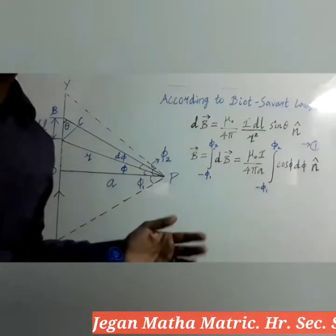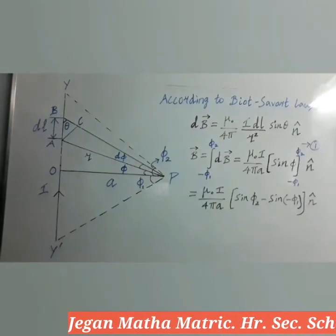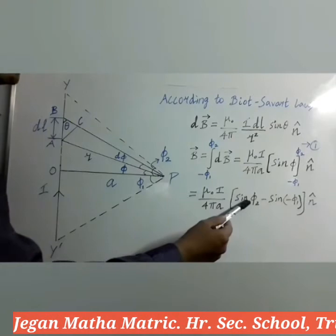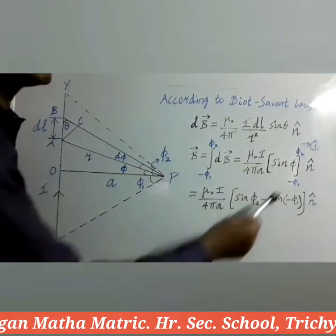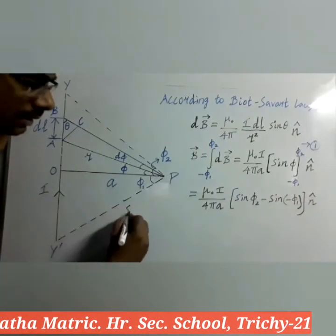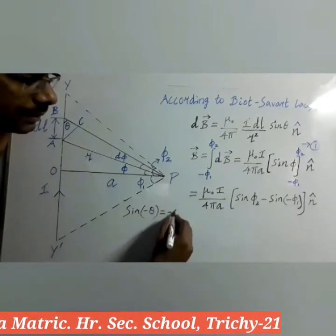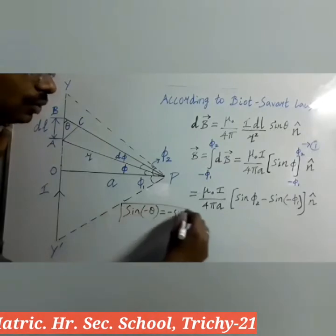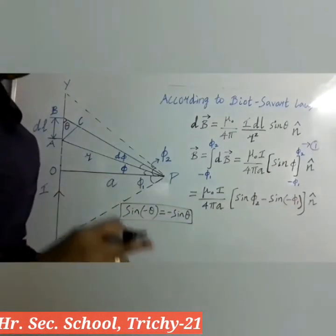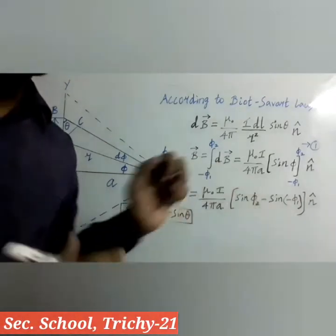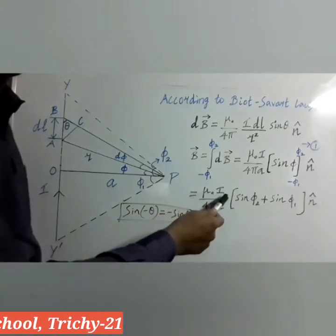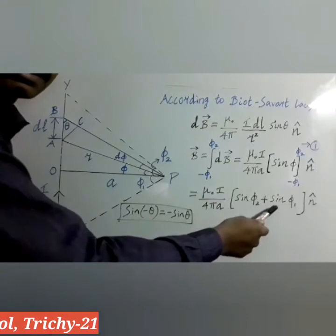Integrating cosΦ·dΦ gives sinΦ. Applying the upper limit sinΦ₂ minus the lower limit gives sin(−Φ₁) into n̂. Since sin(−θ) equals −sinθ, substituting gives −sinΦ₁, and minus times minus becomes plus. So the expression becomes: B = μ₀I by 4πA times (sinΦ₂ + sinΦ₁) times n̂.